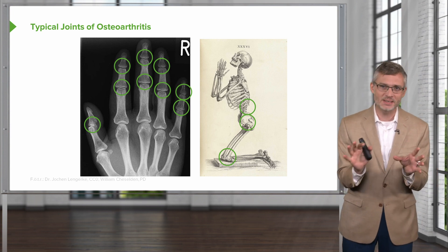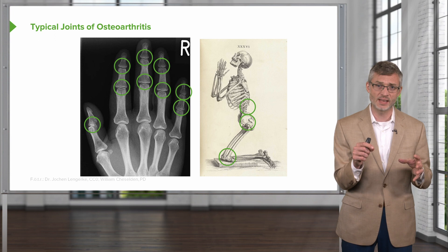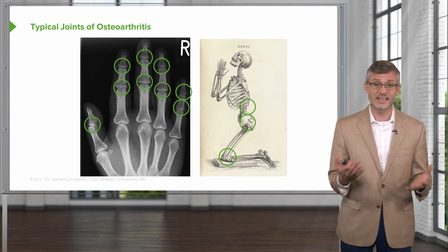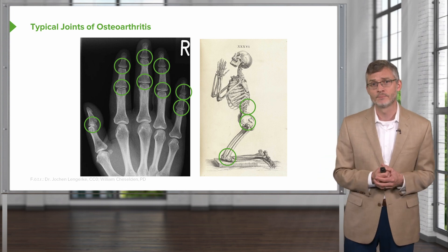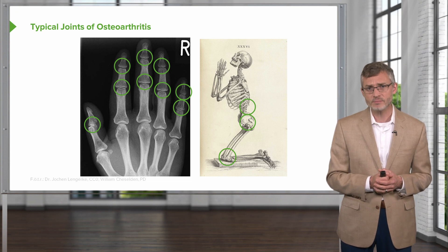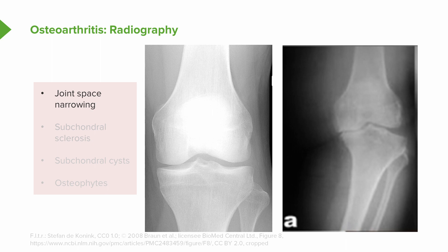Osteoarthritis has a predilection for certain joints: the knees, the hips, the lumbar spine, and the proximal interphalangeal and distal interphalangeal joints of the fingers. Classic physical exam findings include bony enlargement, limited range of motion, varus deformity — meaning somewhat bow-legged — crepitus by palpating the knee while moving it, and joint line tenderness. Looking at radiographic features, the image on the left is a normal knee, and the one on the right shows severe osteoarthritis. You can see joint space narrowing, particularly in the medial compartment, evidence of subchondral sclerosis on the tibial plateau, subchondral cysts, and osteophytes that broaden the size of the knee relative to the tibial plateau.